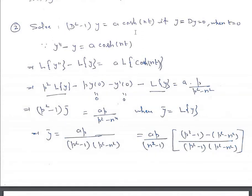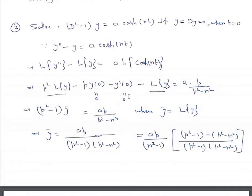Next example: Solve (D² - 1)y = a·cosh(nt), if y = y' = 0 when t = 0. This equation can be written as y'' - y = a·cosh(nt). Taking Laplace transform on both sides: L{y''} - L{y} = a·L{cosh(nt)}. Using the formula: p²·ȳ - p·y(0) - y'(0) - ȳ = a·p/(p² - n²). Since y(0) = 0 and y'(0) = 0, we have (p² - 1)·ȳ = a·p/(p² - n²).